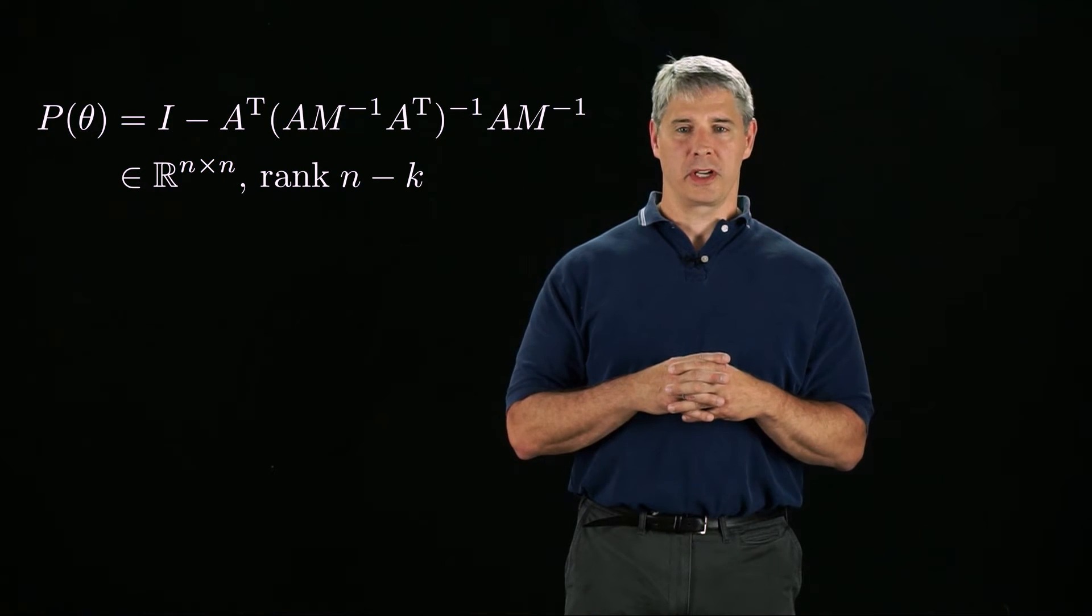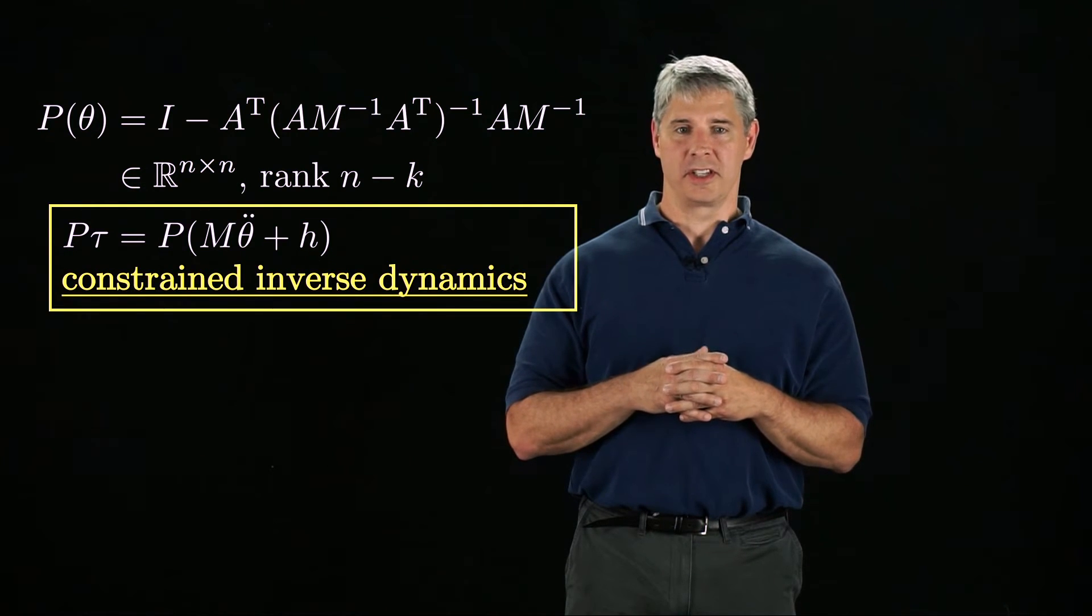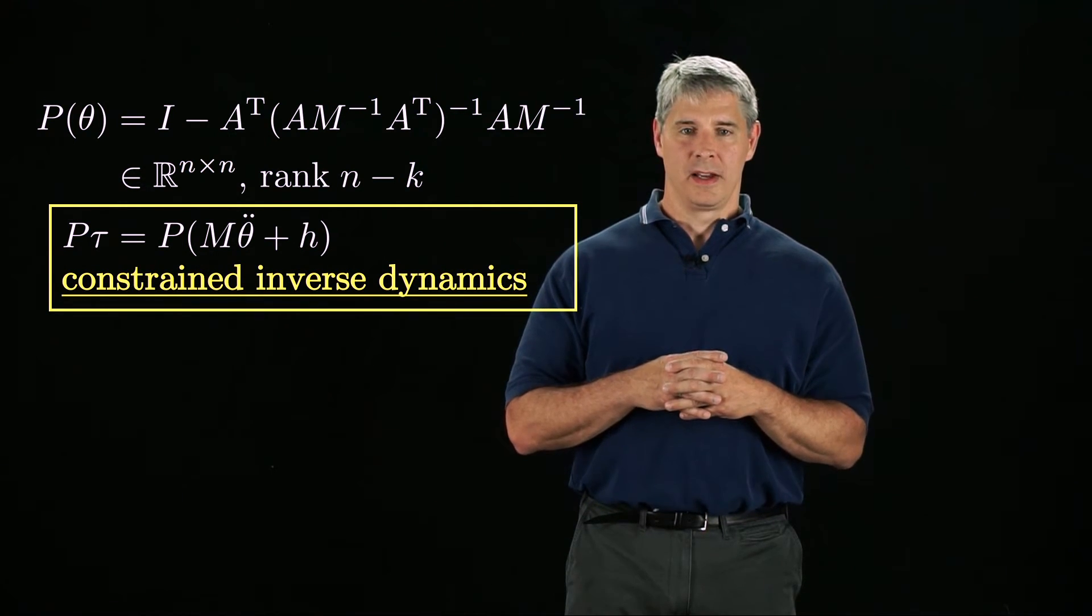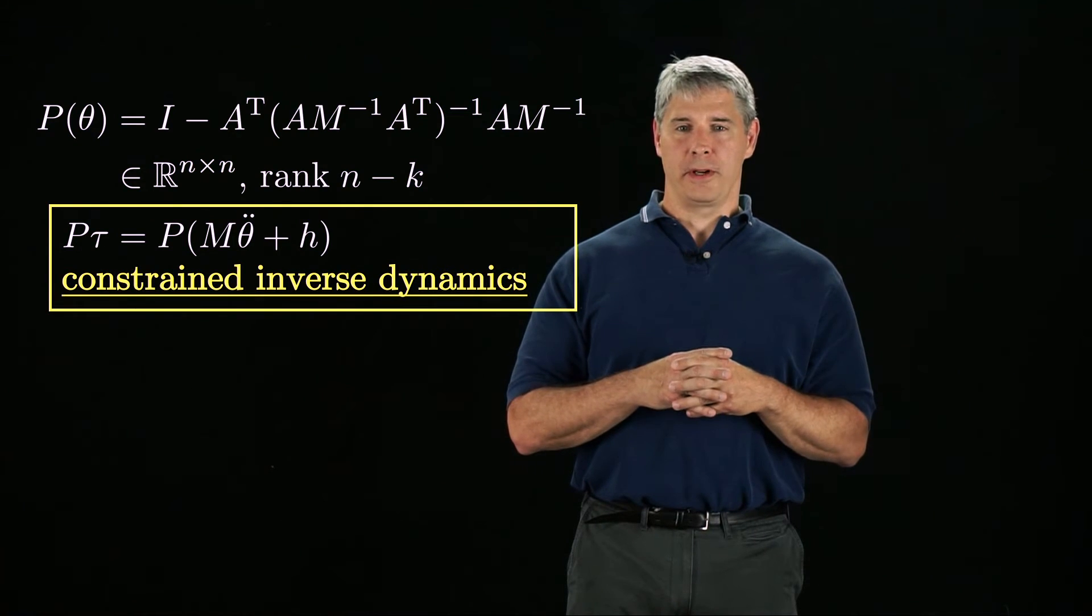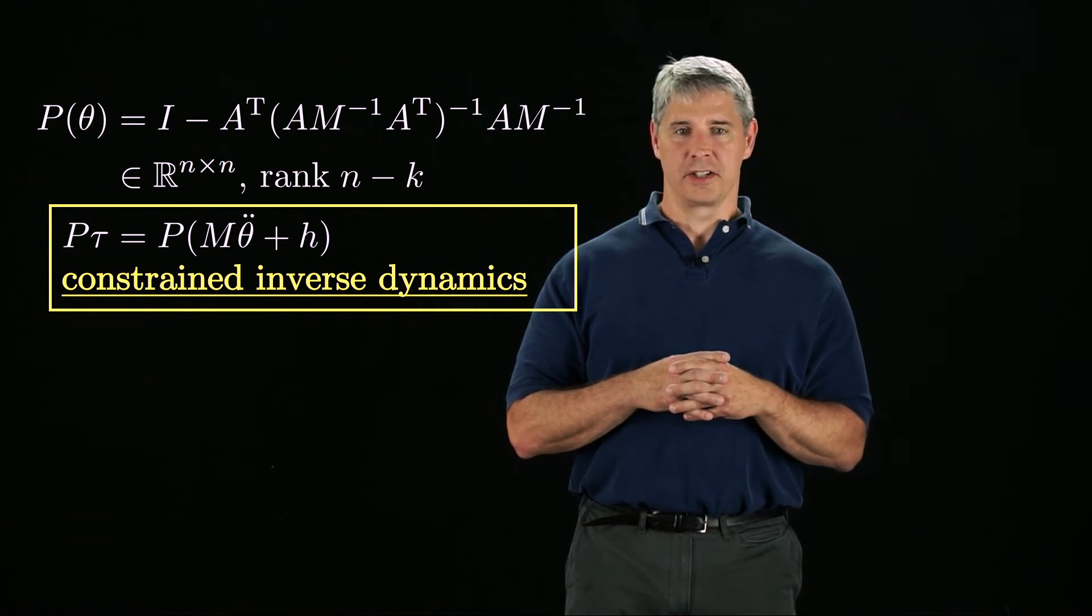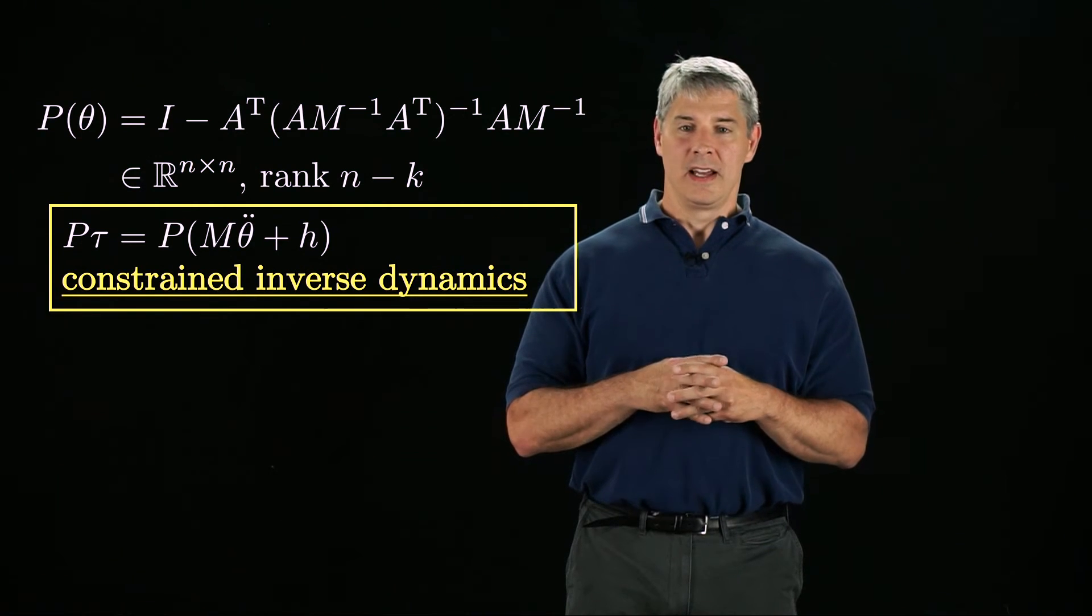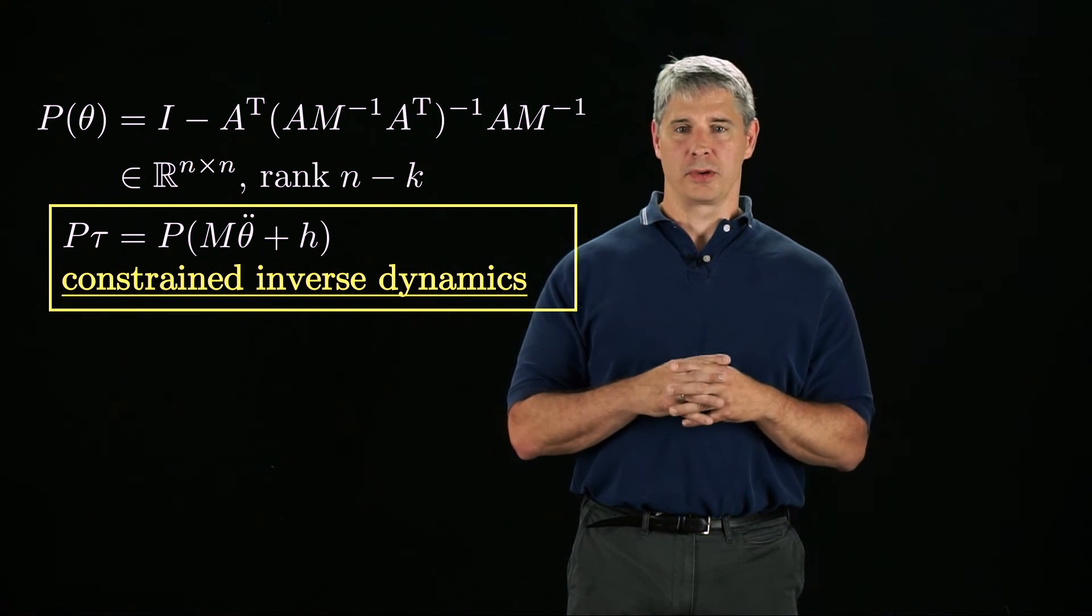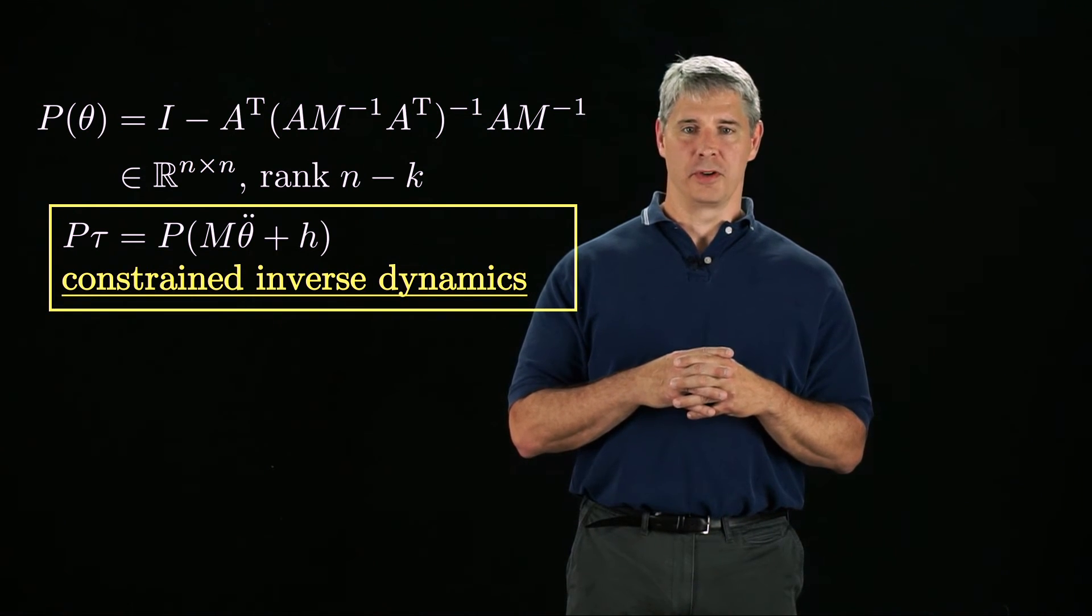Using this projection matrix, we can define the constrained inverse dynamics, P times tau equals P times M theta double dot plus h. Since P is not invertible, we cannot pre-multiply both sides by P inverse to get the unconstrained inverse dynamics. Instead, P projects the joint torques tau to the joint torques that move the robot, eliminating the joint torques against the constraints that cause no motion of the robot.